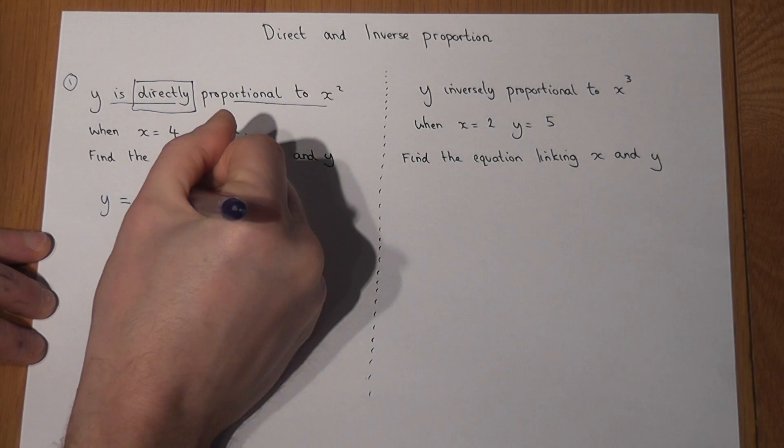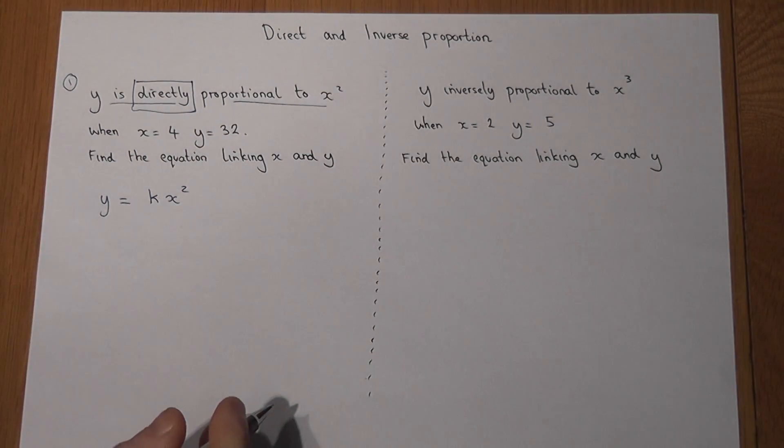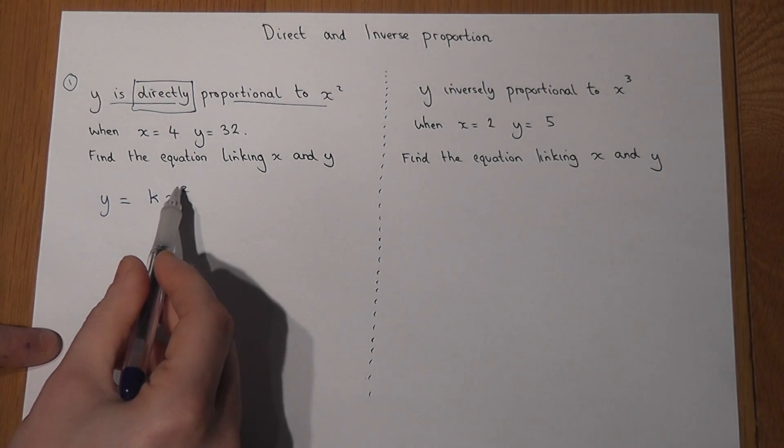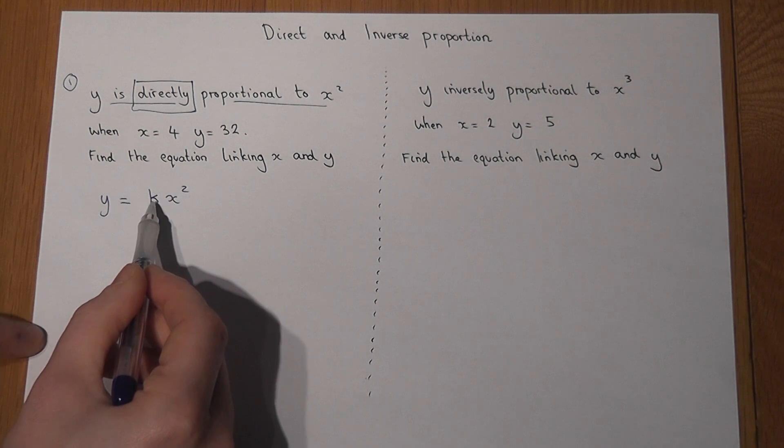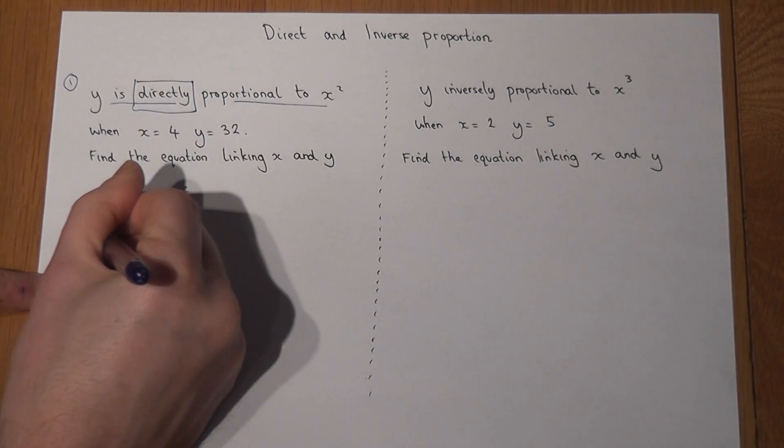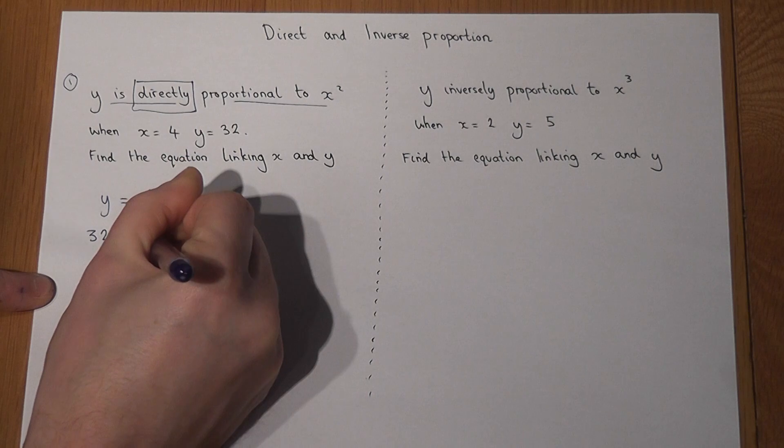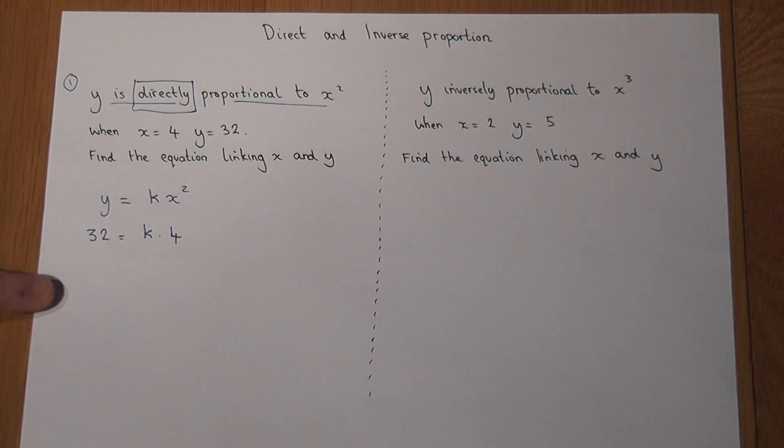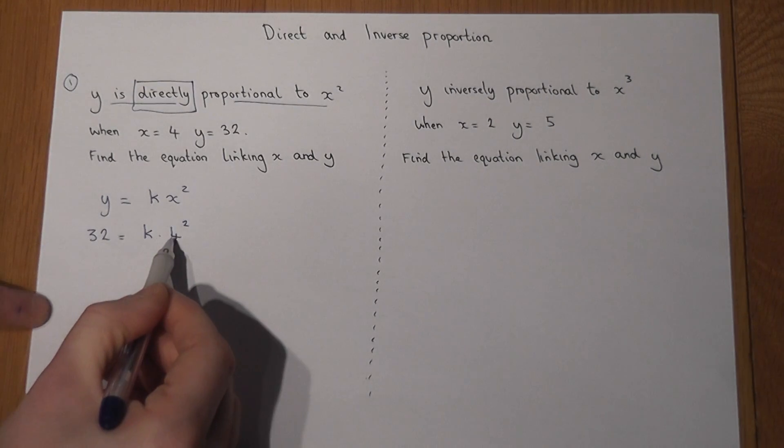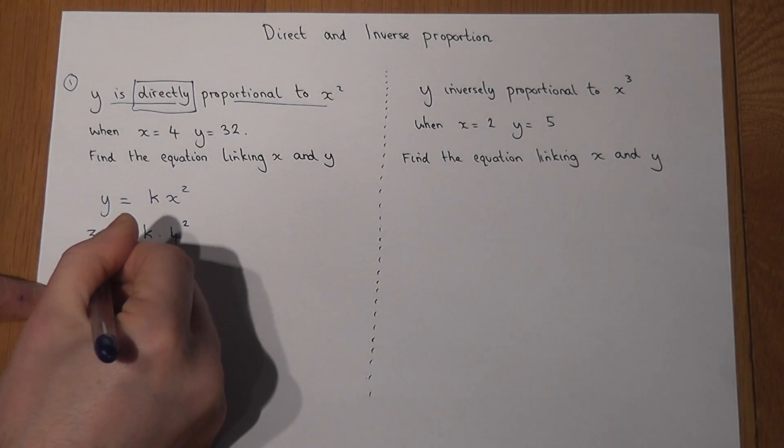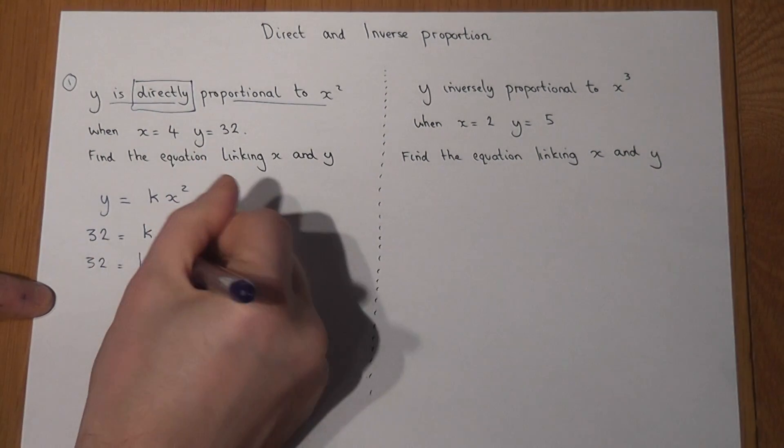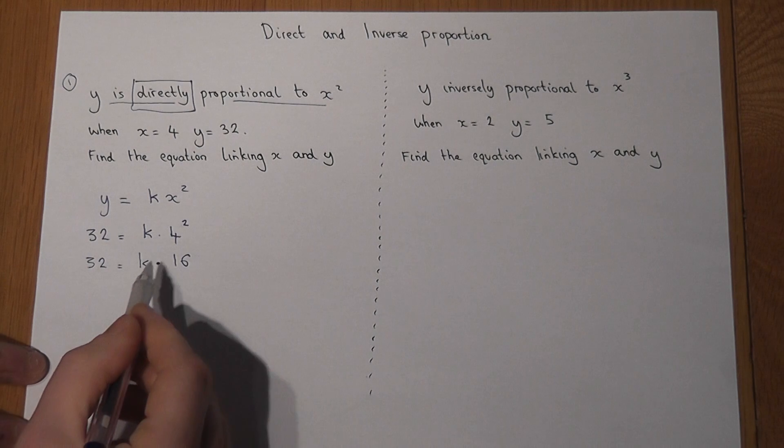So if we know x, if you square it and times by this unknown number, the answer gives us y. All we know is that when y is 32, x is 4. So if I put y is 32 and x is 4, there's a square there in the equation, then 32 is this unknown number times by 4 squared, which is 16.